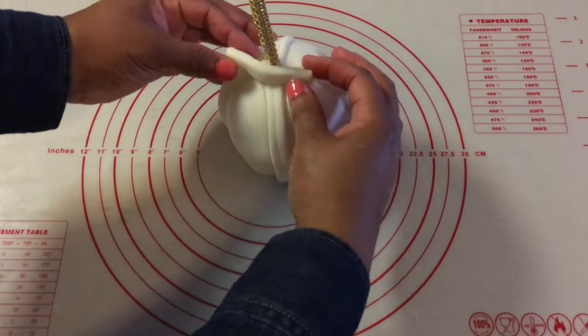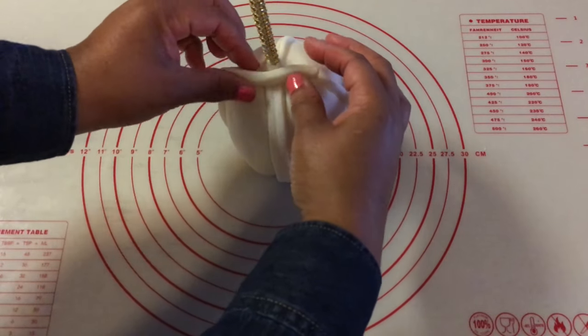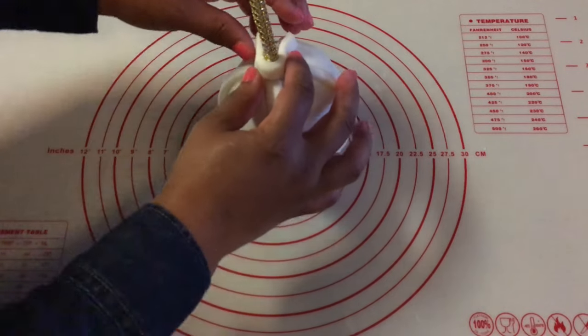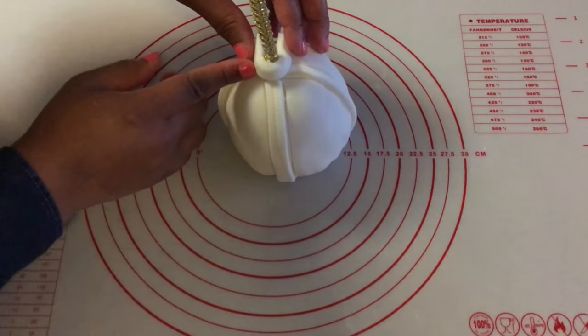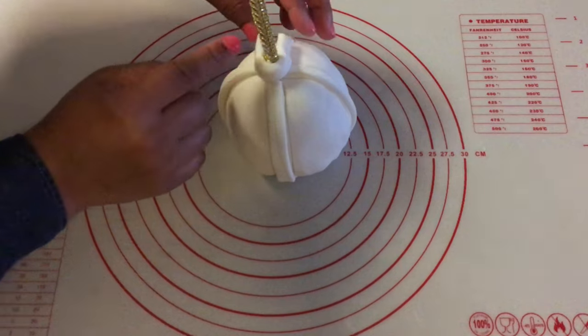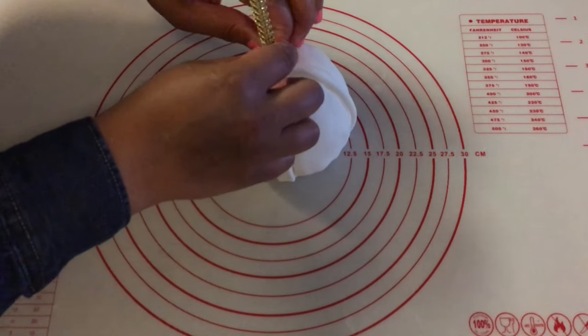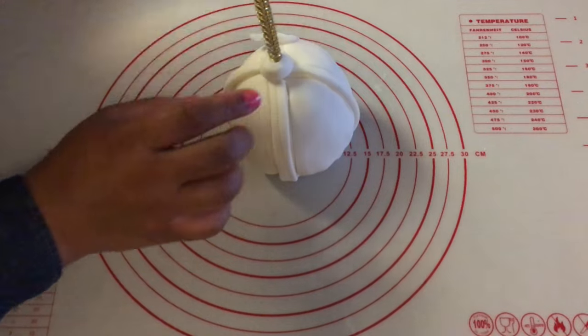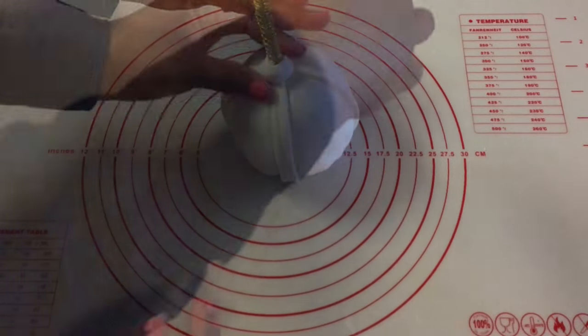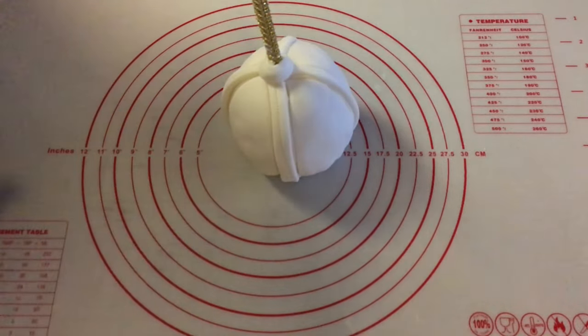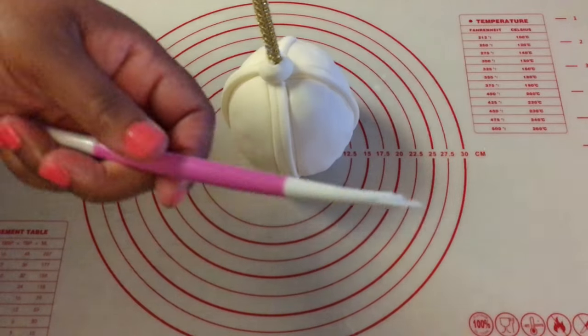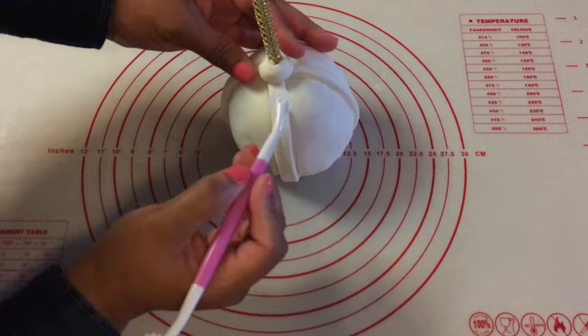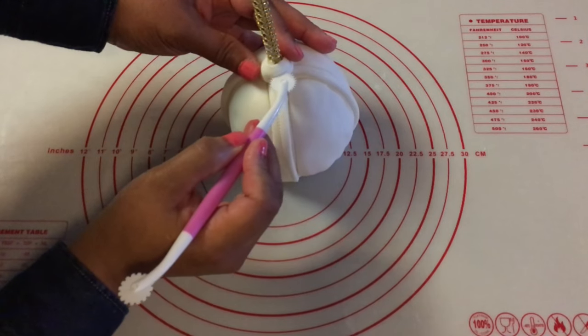So now you are going to take a strap of fondant and just wrap it around the top part. You can pull any extra fondant off. You want to take your fondant wheel to kind of make a seam going around.